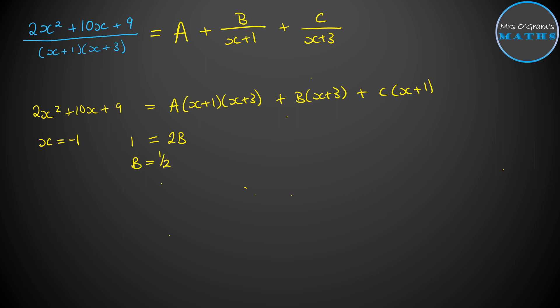Then I can either substitute in X equals minus 3 or I can compare coefficients. So I'm going to go with comparing the coefficients of X squared. So on the left hand side, we have 2. The only place to get an X squared on the right hand side is from the A. So A equals 2.